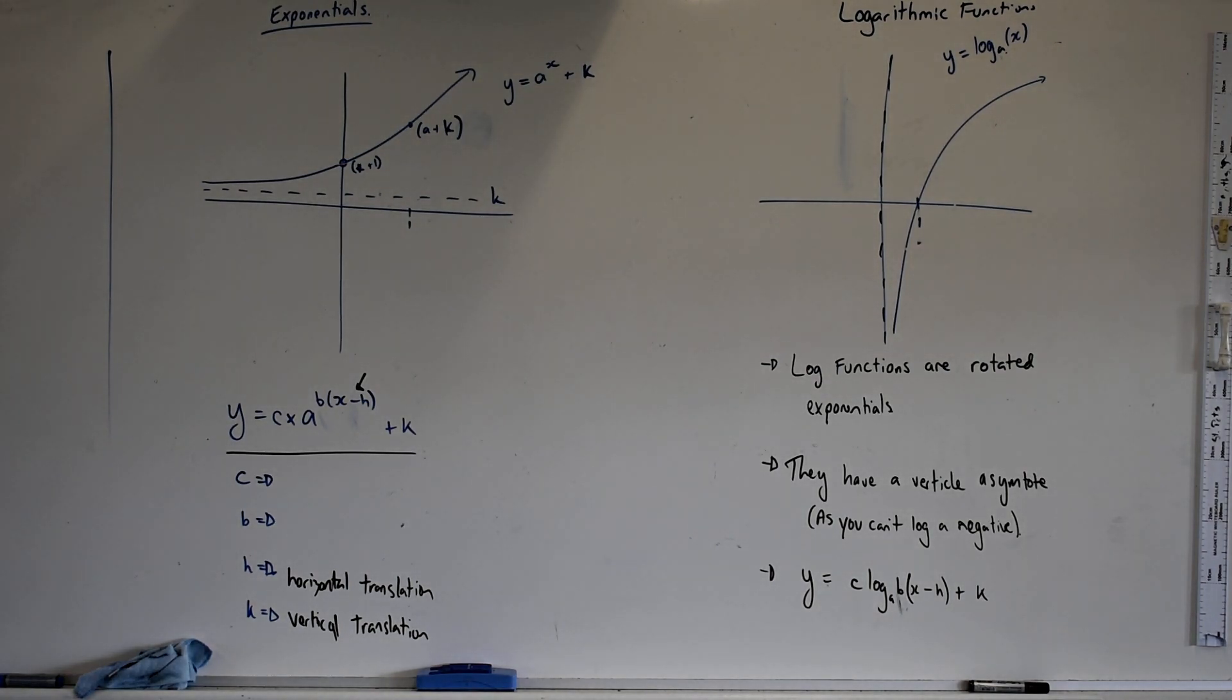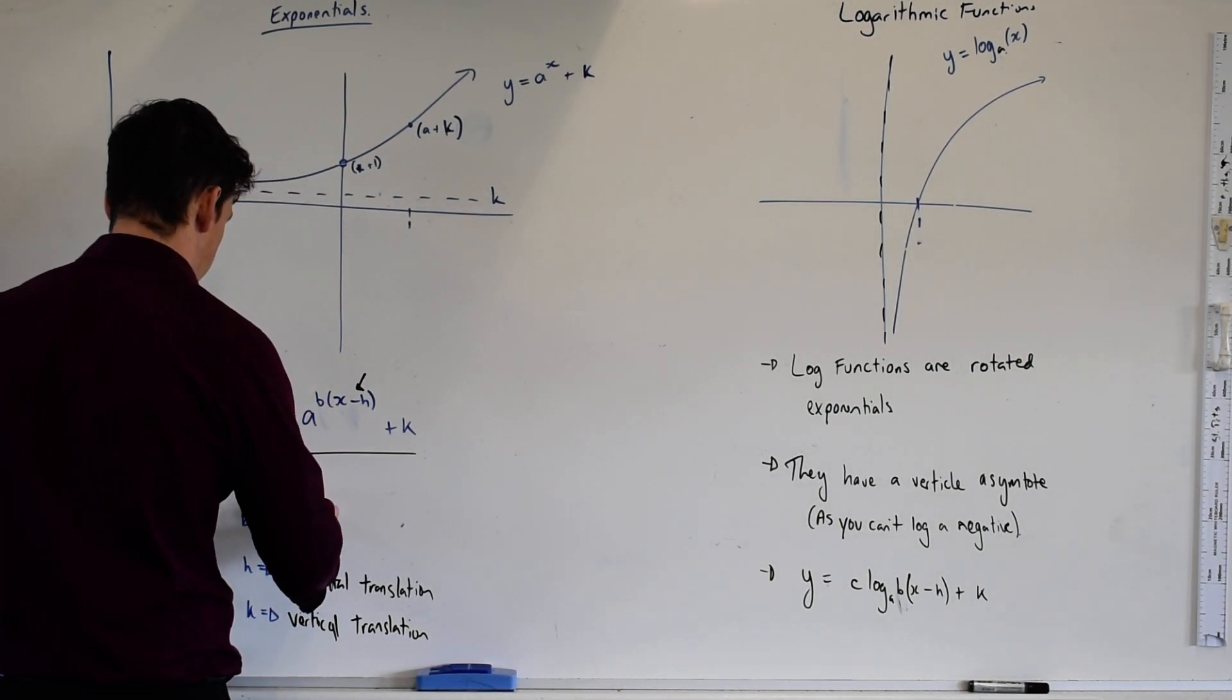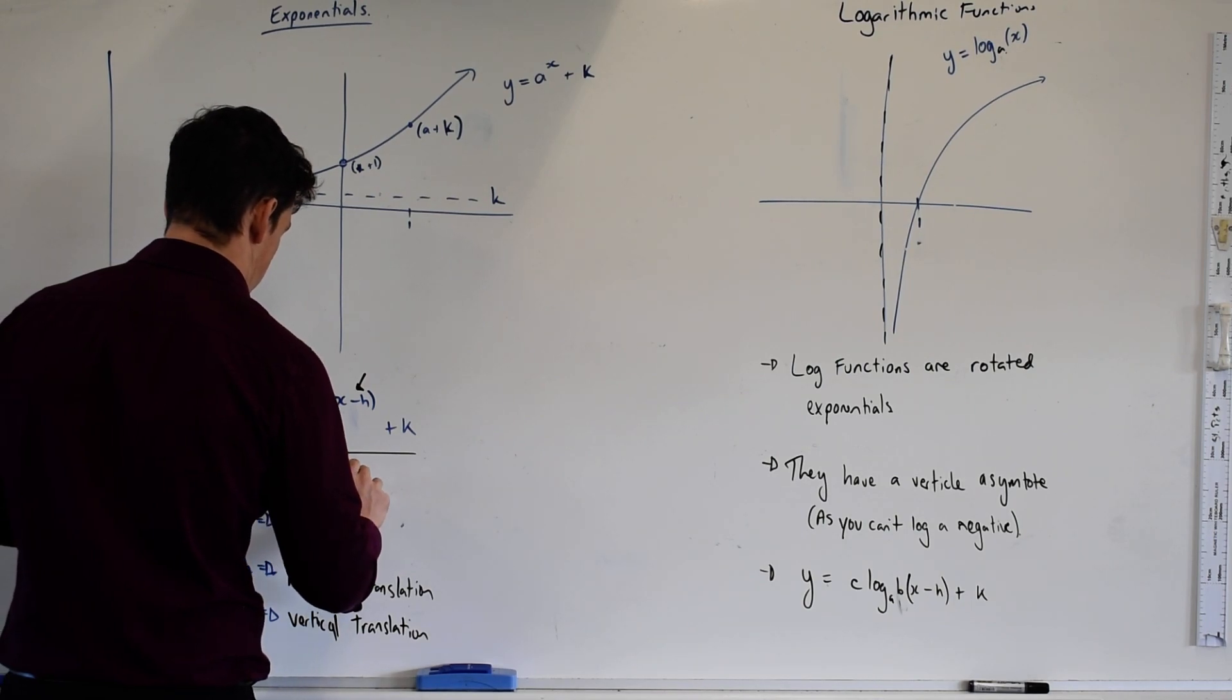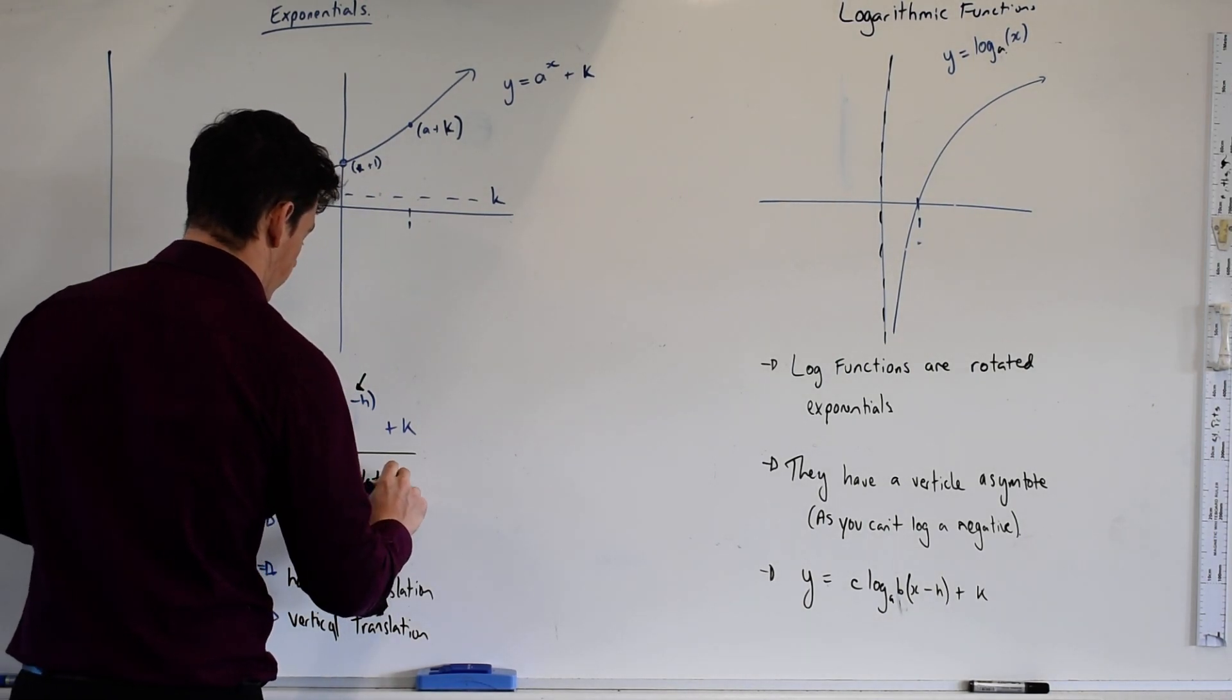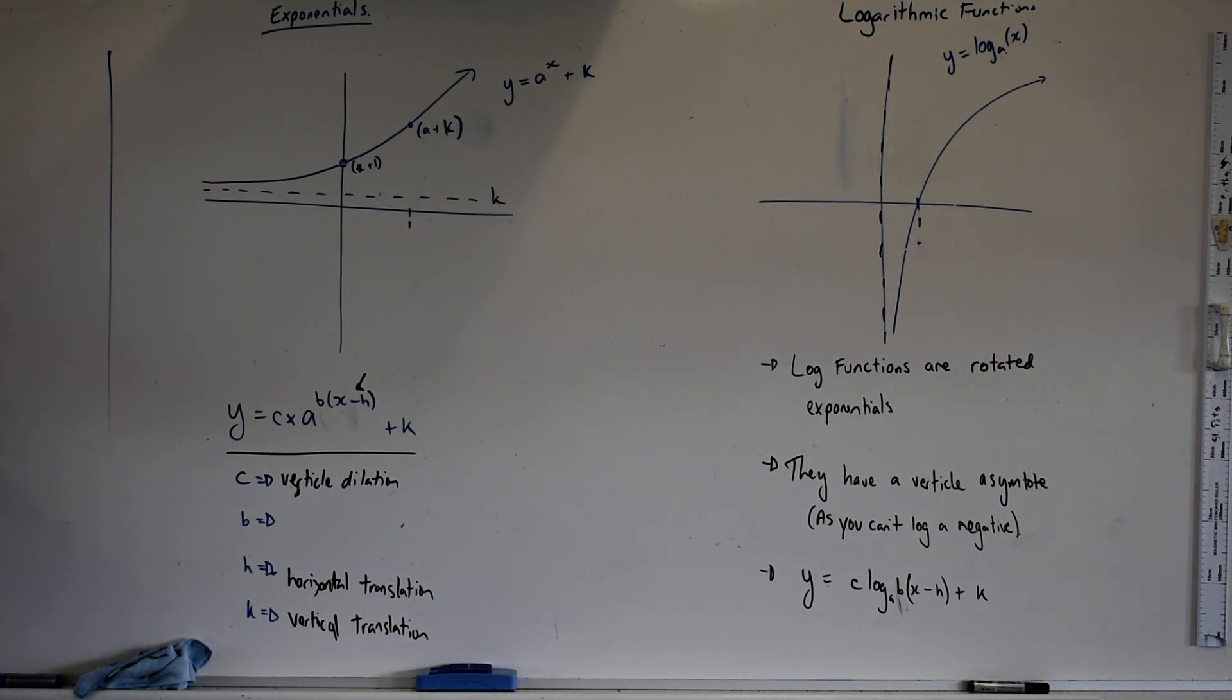Now we've dealt very closely with the c value before. What do we think the c value is going to do? Often we call this an a value, but I can't reuse the letter a. It's a vertical dilation. So think of that as grabbing the function and stretching it up and stretching it down.